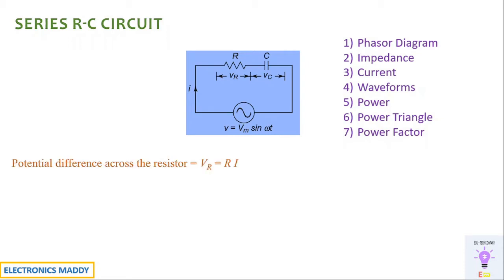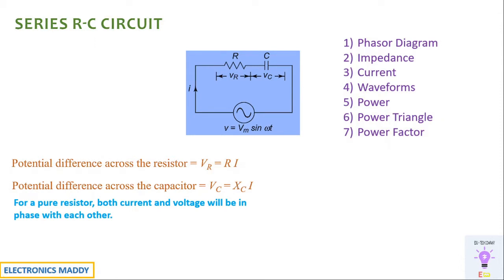We will be drawing a few conclusions from our previous videos. With respect to Ohm's law, we know the potential difference across a resistor in the circuit VR is equal to I into R. The voltage drop across the resistor is indicated by VR and voltage drop across the capacitor is VC, and I is the current flowing through the circuit. Similarly, with respect to Ohm's law, potential difference across the capacitor VC is equal to I into XC, where XC is the impedance offered by the capacitor. This is already derived in our previous videos. One of the most important conclusions is that for a resistor, both current and voltage will be in phase with respect to each other. This implies that VR bar is in phase with respect to I bar. The bar notation indicates it is a phasor quantity — there is a clear difference between a phasor quantity and a scalar magnitude voltage.